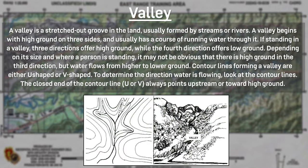A valley is a stretched-out groove in the land usually formed by streams or rivers. It begins with high ground on three sides and usually has a course of running water through it. If standing in a valley, three directions offer high ground while the fourth offers low ground. Contour lines forming a valley are either U-shaped or V-shaped. To determine the direction the water is flowing, look at the contour lines — the closed end of the contour line always points upstream towards higher ground.